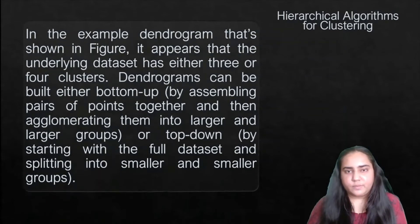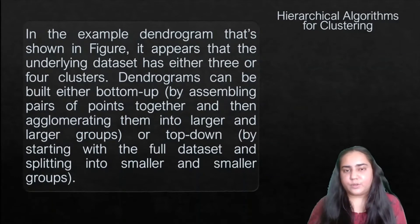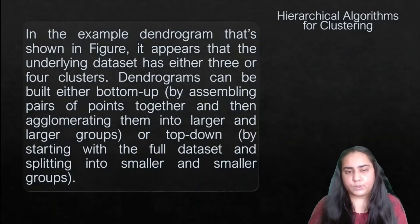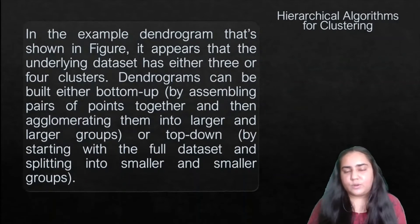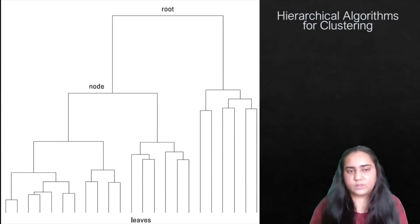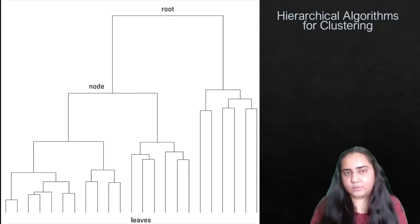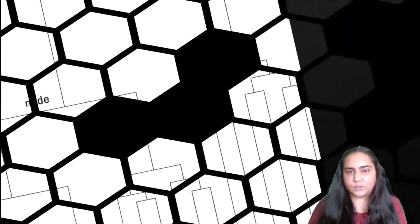In this example dendrogram, the underlying dataset appears to have either three or four clusters. It can be built in a bottom-up manner — assembling pairs of points and agglomerating them into larger groups — or in a top-down manner by starting with the full dataset and splitting into smaller groups. You can identify three separate clusters, or divide it into two. If you want more clusters or fewer clusters, it's up to you.